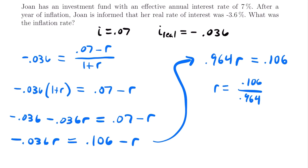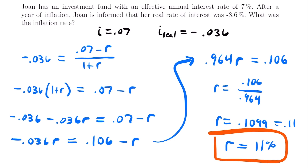Plugging that into your calculator, R equals 0.1099, which rounds to 0.11, or 11%. So the rate of inflation is equal to 11% — that is Joan's inflation rate for this scenario. That was the last example for this video. If you have any questions, feel free to leave those in the comments below. I'll see you next time.